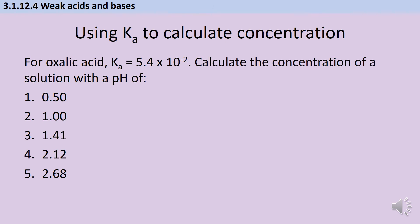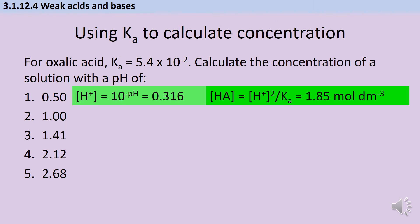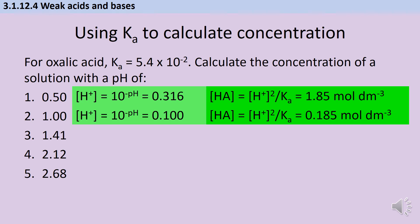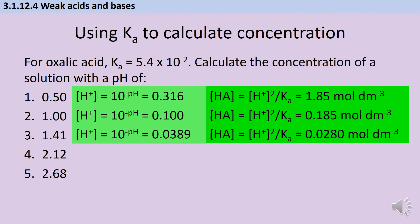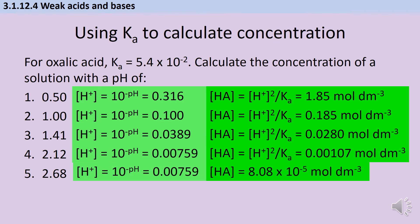Here are five calculations to attempt. For each question, use the pH to find [H⁺], write and rearrange the Ka expression, then substitute in Ka and [H⁺] to find concentration. Answers: Question 1 — [H⁺] = 0.316, concentration = 1.85 mol dm⁻³. Question 2 — [H⁺] = 0.1, concentration = 0.185 mol dm⁻³. Question 3 — [H⁺] = 0.0389, concentration = 0.0280 mol dm⁻³, and so on.